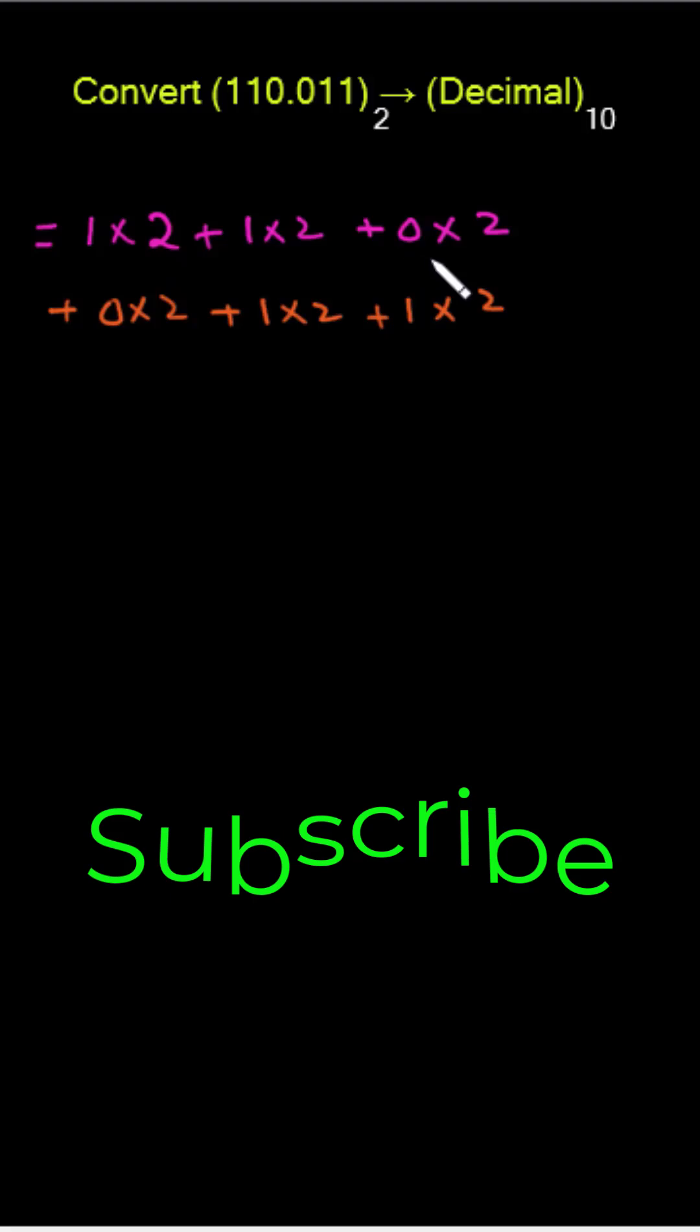Now we have to assign powers to this base. We start from the base connected to the unit place digit. So here, we start from this 2, which will get 0. This 2 will get 1, this will get 2. Now on the other side of the point, we have -1, this 2 will get -2, and this one gets -3.